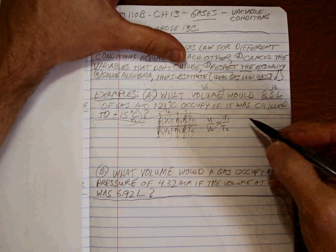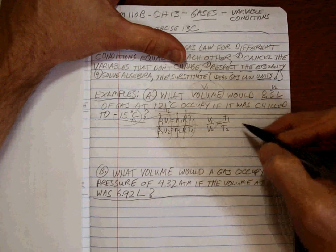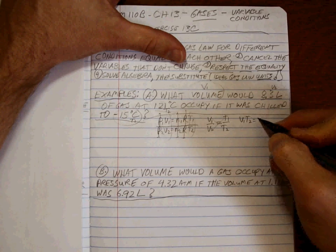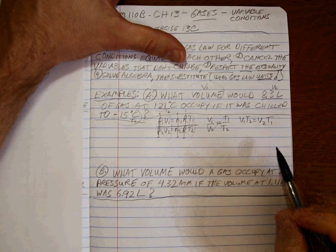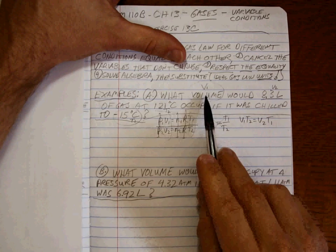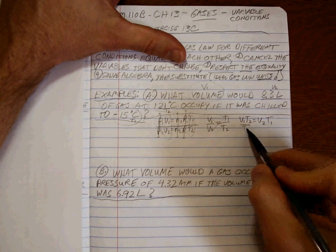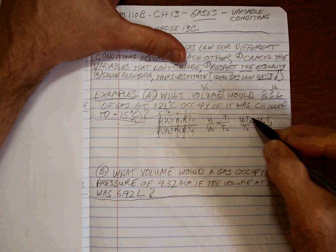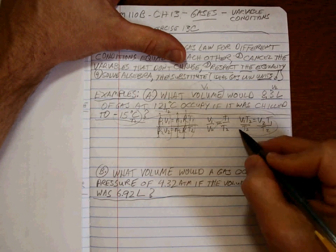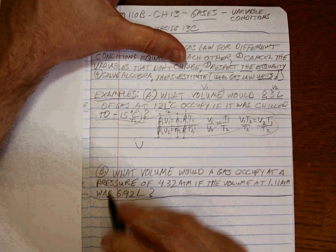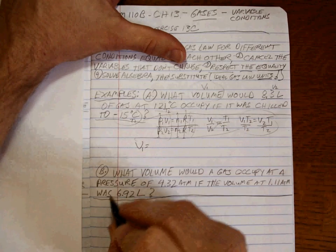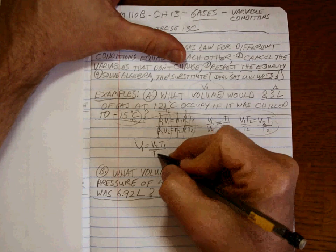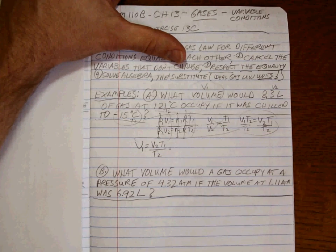Easiest way to get everything up into the numerator is to cross-multiply. V1T2, V2T1. And then we solve for what we want. We decided to solve for V1 here. So we divide both sides by T2. So, this whittles down to V1 equal to V2T1 over T2. Now, remember, you have to make sure that your ideal gas law units are being used.